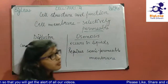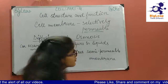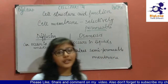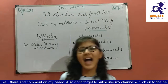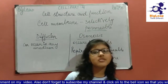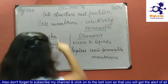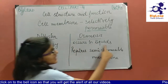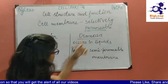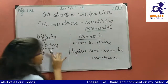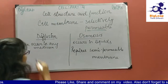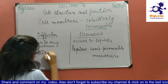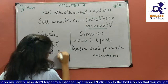There are two methods by which substances pass through the cell membrane: diffusion and osmosis. Both do not require energy and involve movement from high concentration to low concentration. Diffusion can take place in any medium, while osmosis only takes place in liquids and requires a semi-permeable membrane.